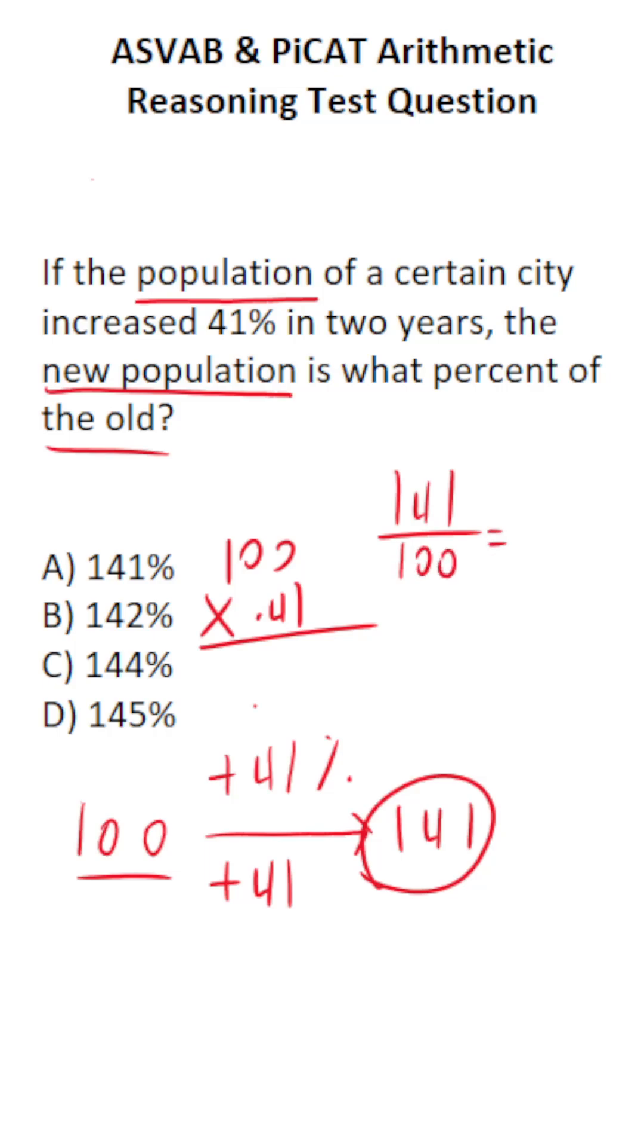Anything divided by 100 gives you its percent. So 141 over 100 tells you that its new population is 141% of its old population.